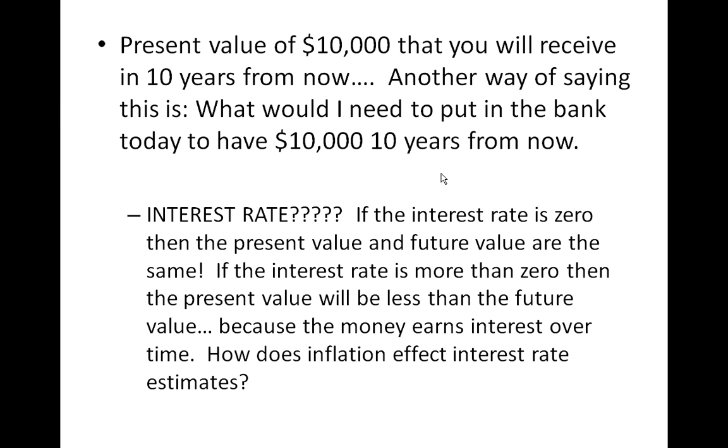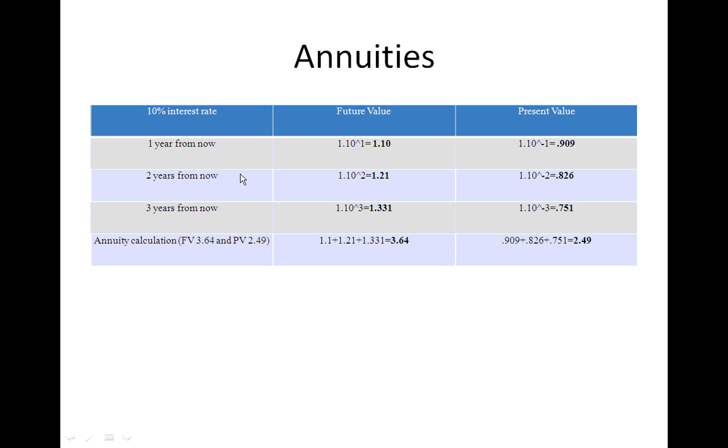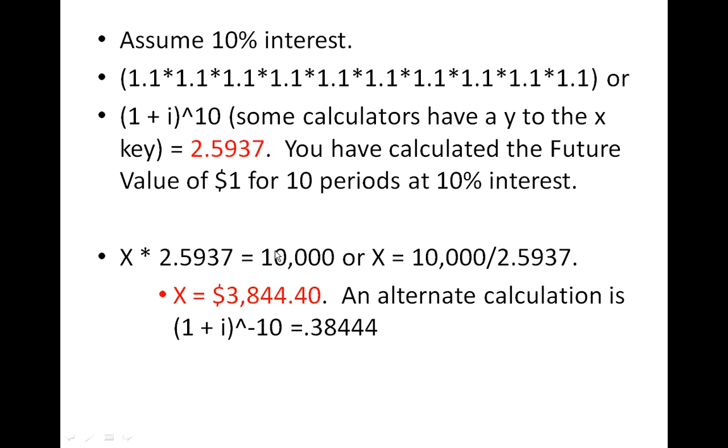So we're assuming a 10% interest rate. We could manually calculate this by taking 1.1 times 1.1 and doing that 10 times, or 1 plus the interest rate to the 10th power. And if some calculators don't have that little caret, they've got a Y to the X key. But if you punch that in, you'll get 2.5937. Well, if we multiply that times $10,000, that gives us $25,937. That's not what we're looking for. That's a future value money factor.